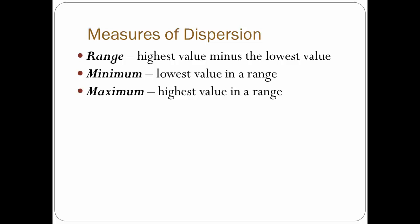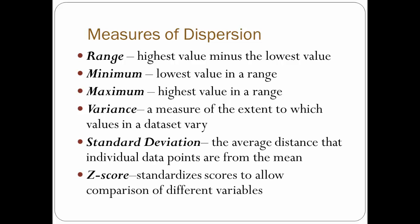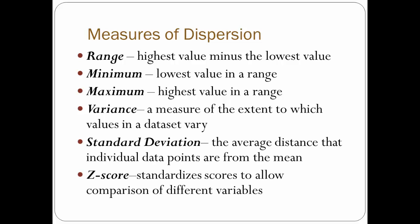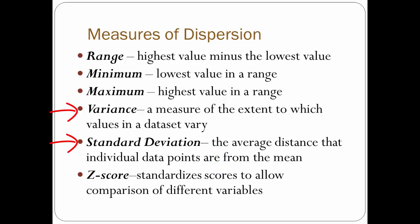That covers the first three measures of dispersion. The next three are interrelated: variance, standard deviation, and z-score. You calculate variance on the way to calculating standard deviation, and you need standard deviation to calculate the z-score. The first two — variance and standard deviation — deal with how the numbers are spread out, or how they vary, in relation to the mean.